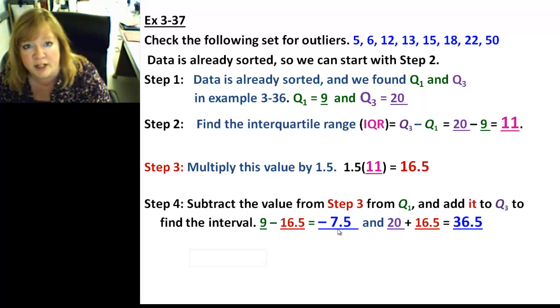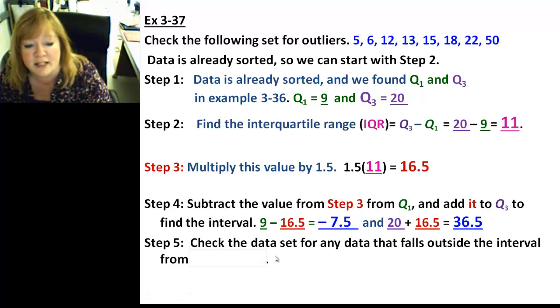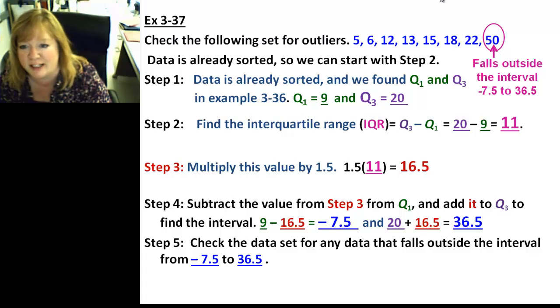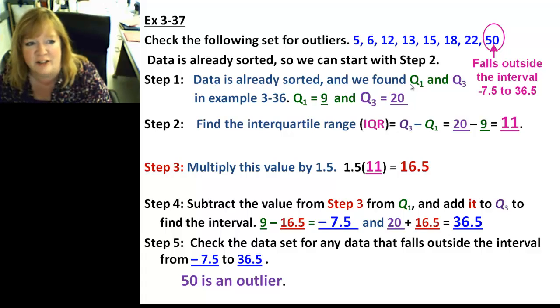These numbers in blue here, that's our interval. So, we're going to check the data for any data that falls outside of the interval from negative 7.5 to 36.5. Do we have a winner? 50. That guy is bigger than 36.5. So, it's not in between those two numbers. So, it's an outlier. It falls outside the interval from negative 7.5 to 36.5. So, it is considered an outlier.